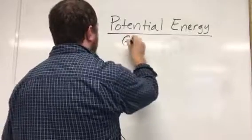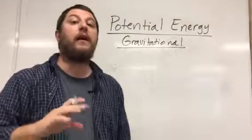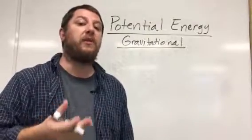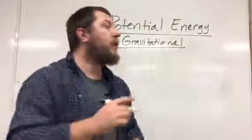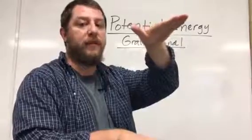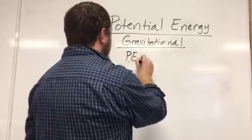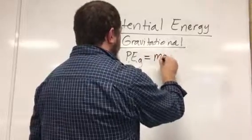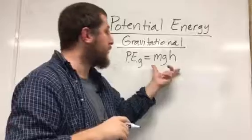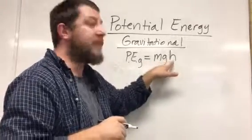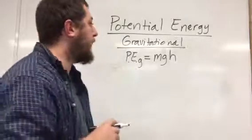Potential energy has the same units as work and kinetic energy: joules. Gravitational potential energy is the stored energy you have as you lift something against the force of gravity. Lifting something a height H above a surface requires work MGH, and therefore gives it potential energy MGH. So gravitational potential energy equals the force of gravity times the height lifted: mgh. This is simply the amount of work you put in to raise the object.